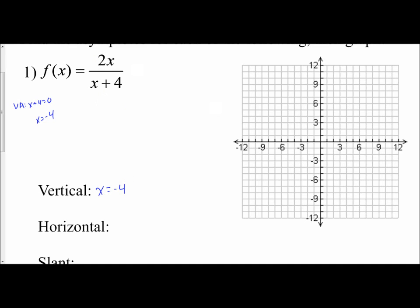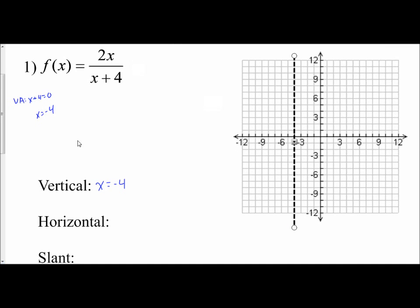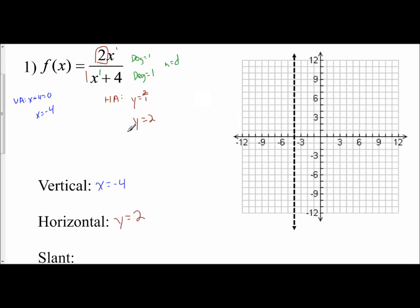To graph asymptotes, we use dashed lines, so I'm going to have a vertical dashed line going through negative 4 on the x-axis. Now I have to determine: am I going to have a slant or a horizontal asymptote? You look at the degrees in the numerator and denominator. The degree in the numerator is 1 and the degree in the denominator is 1 — they're equal. So I use y equals the ratio of the leading coefficients: 2 over 1, which is 2. So I have a horizontal asymptote of y equals 2, which means I do not have a slant.